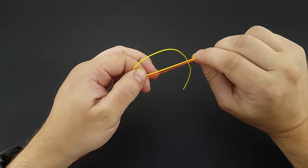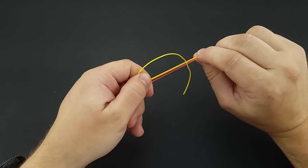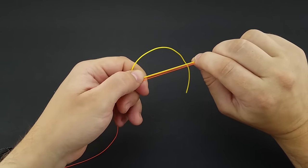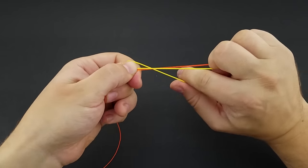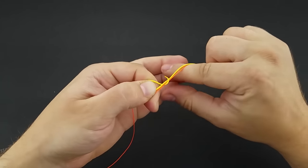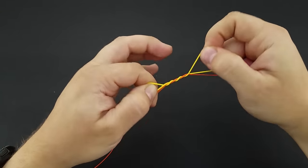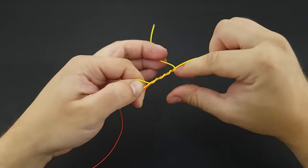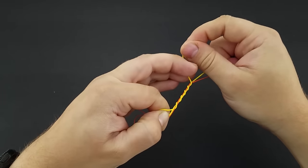Now with the thicker line I like to do three to six wraps; with a lighter line, six to ten wraps. So I'm going to do that right now. One, two, three, four, five.